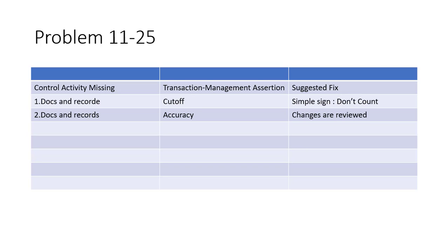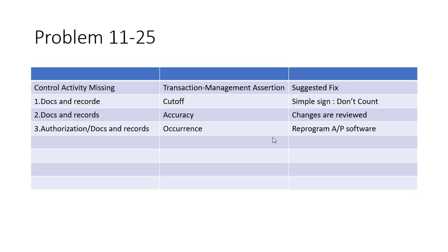The third misstatement: a vendor invoice was paid even though no merchandise was ever received. The accounts payable software application does not require the input of a valid receiving report number before payments can be made. The controls missing are authorization and documents and records — software should be able to make an authorization and say it's okay to pay. When you pay for something you don't have, that's a problem with occurrence. The suggested fix is to reprogram the AP software so that it can't happen.